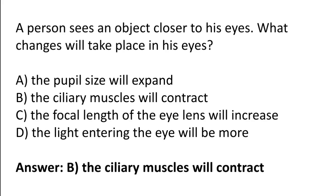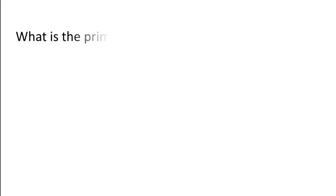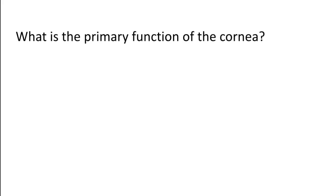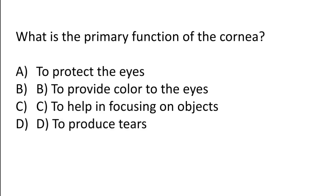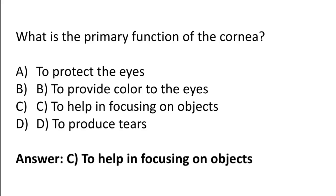What is the primary function of the cornea? To protect the eyes, to provide color to the eyes, to help in focusing on objects, or to produce tears. The correct answer is option C — the primary function of the cornea is to help in focusing on objects.